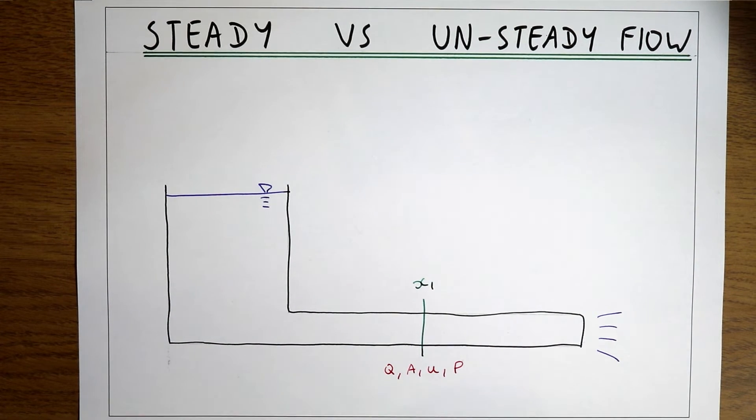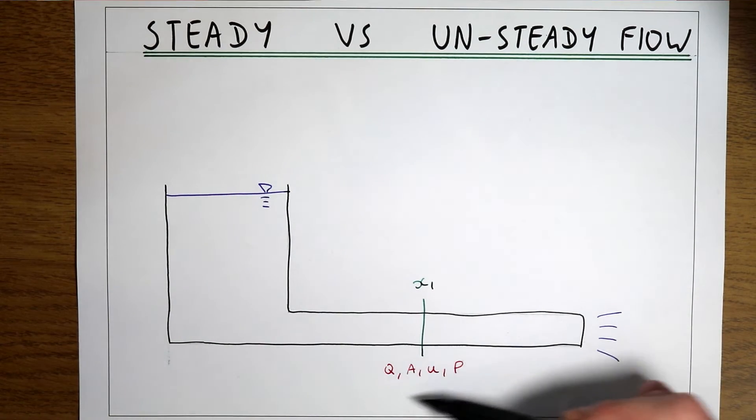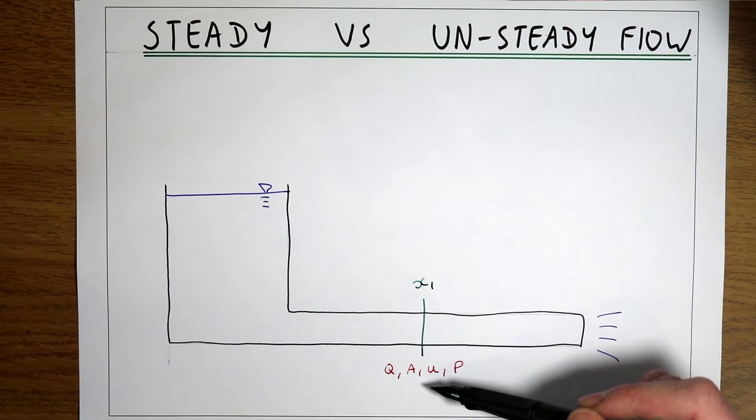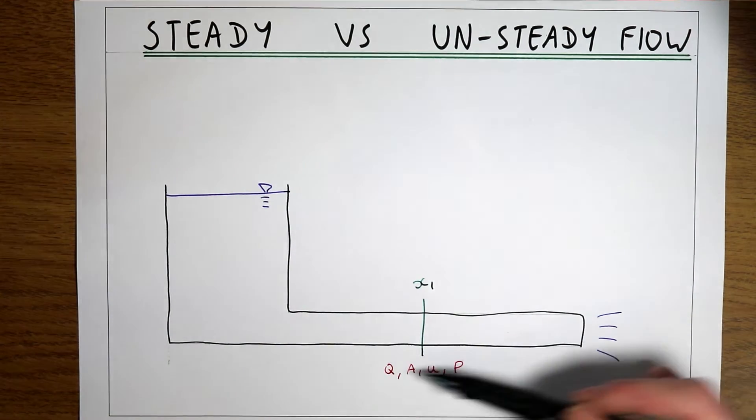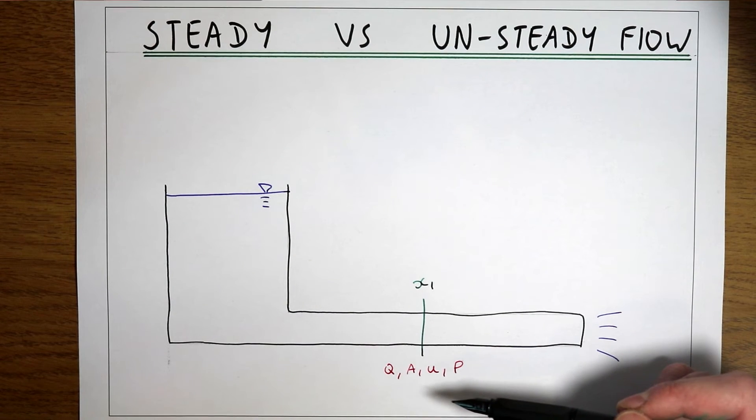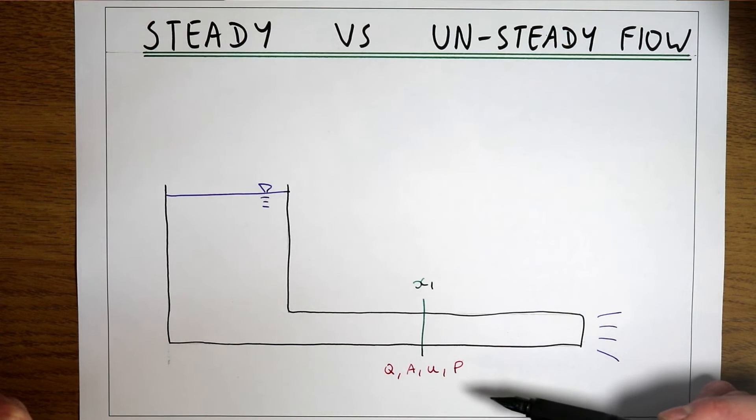If the flow is steady, then all of these parameters will stay the same with time. So if we measure these parameters and they all have a certain value, we then start a stopwatch and measure those parameters again after a certain period of time and they're all the same, then the flow is steady.